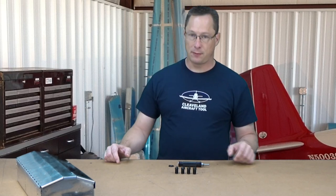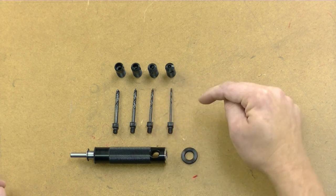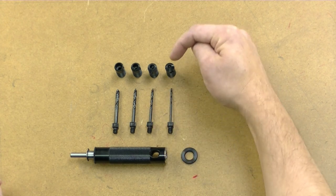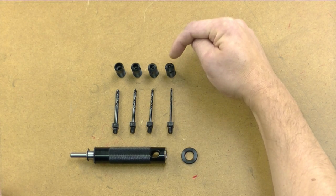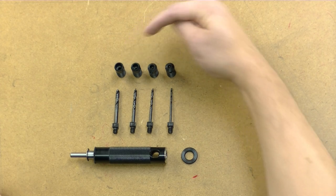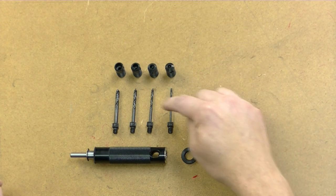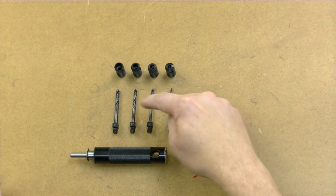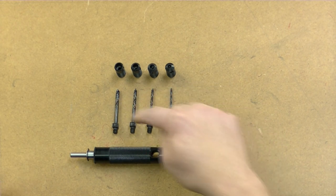First of all, the rivet removal tool comes in this kit here, which has parts for 3/32, 1/8 inch, 5/32, and 3/16 rivets, and then the corresponding drill bits 40, 30, 21, and 10.